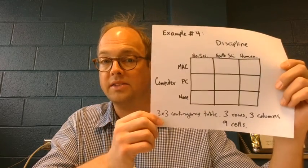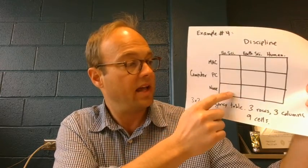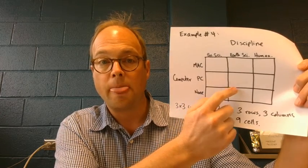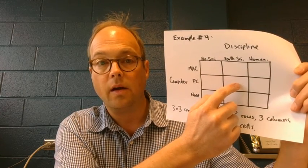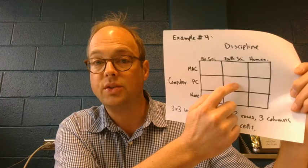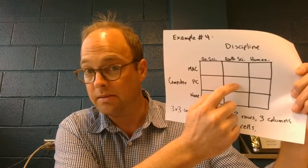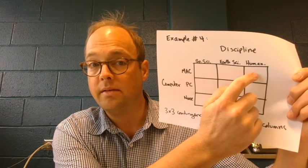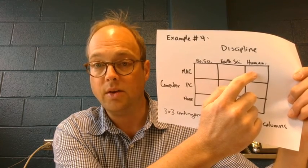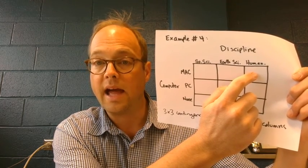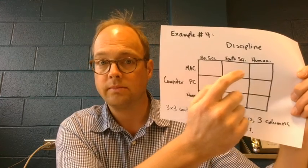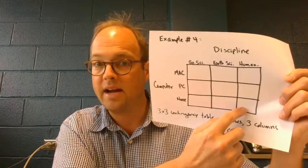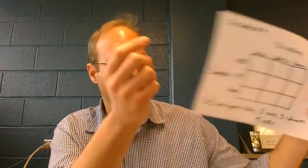Three rows, three columns are nine cells. Down here in this cell would be social scientists who report using no computer. Right here would be earth scientists who report using the PC. This cell would contain people in the humanities who are Mac users. These are social scientists who are Mac users. These are humanities who report no computer, and so on.